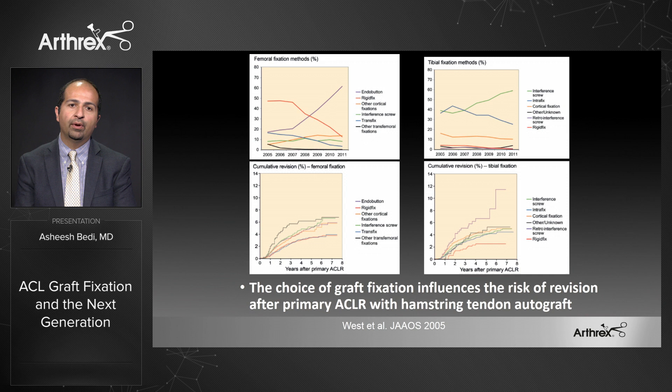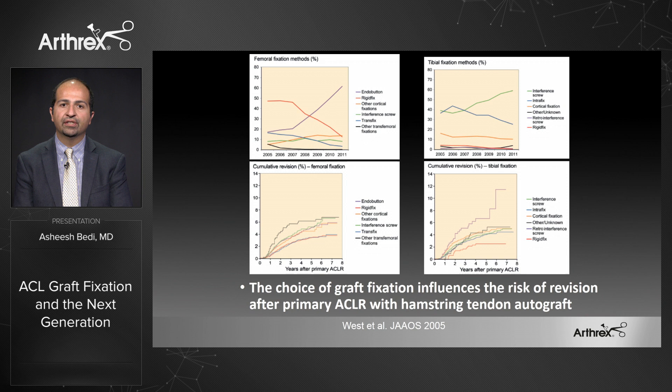A 2005 paper by West points out that the choice of graft fixation even influences the risk of revision surgery after a primary ACL reconstruction with a soft tissue graft. Soft tissue grafts are particularly vulnerable. Rather than bone-to-bone fixation, which is typical for orthopedic principles from trauma and AO surgery, soft tissue grafts offer additional challenges.